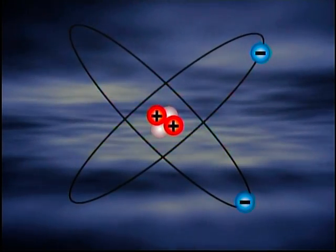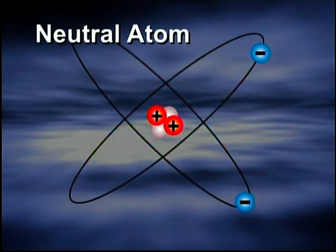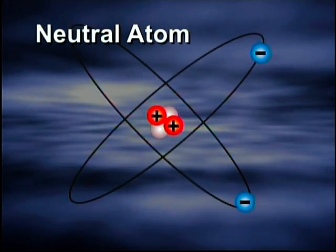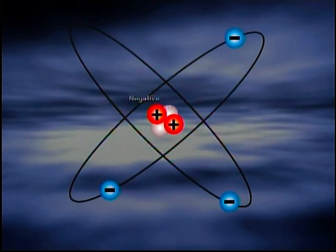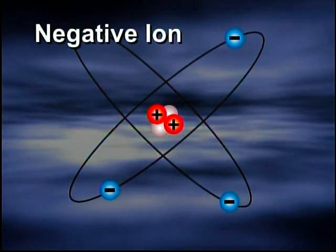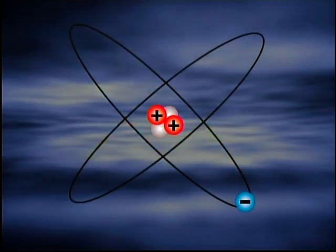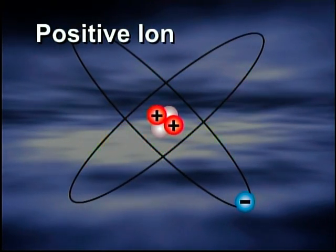An atom is balanced when it has an equal number of protons and electrons. It has no charge and is said to be neutral. When an atom has more electrons than protons, it has a negative charge and is called a negative ion. An atom that has fewer electrons than protons will have a positive charge and is known as a positive ion.